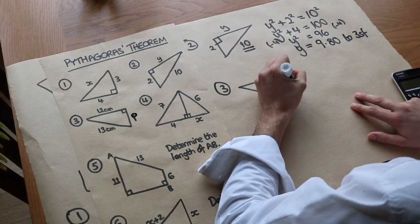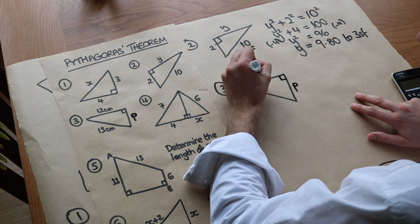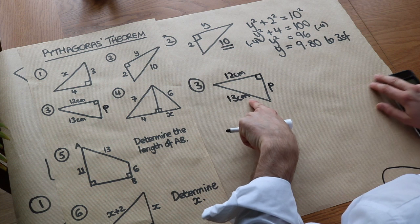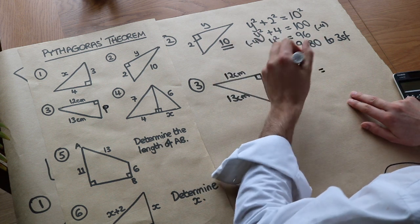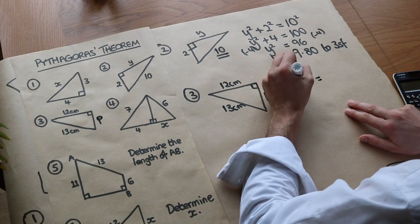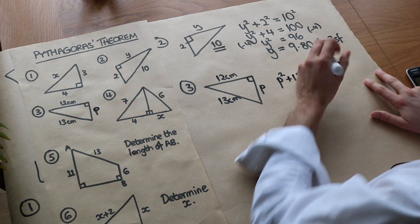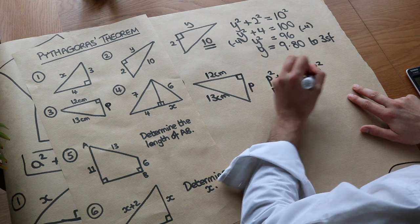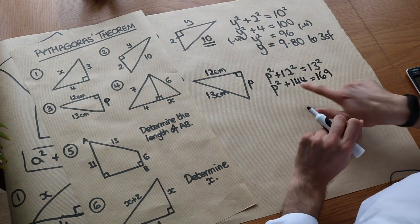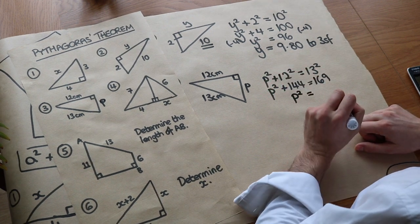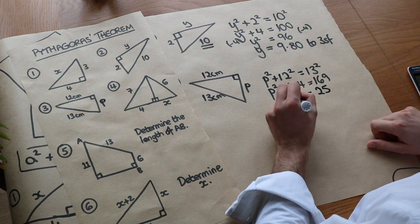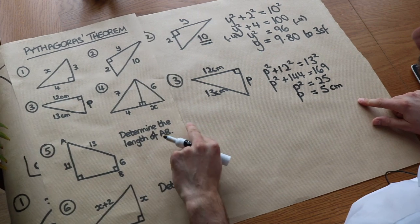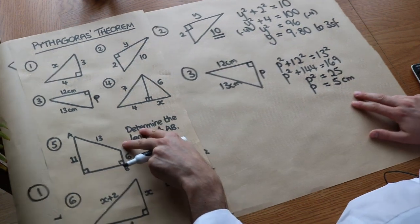For example 3, we have sides p, 12 cm, and 13 cm. The hypotenuse is 13 (opposite the right angle), so it goes on its own: p² + 12² = 13². Simplifying: p² + 144 = 169. Subtracting 144: p² = 25. Square rooting: p = 5 cm. This is another Pythagorean triple — 5, 12, 13.